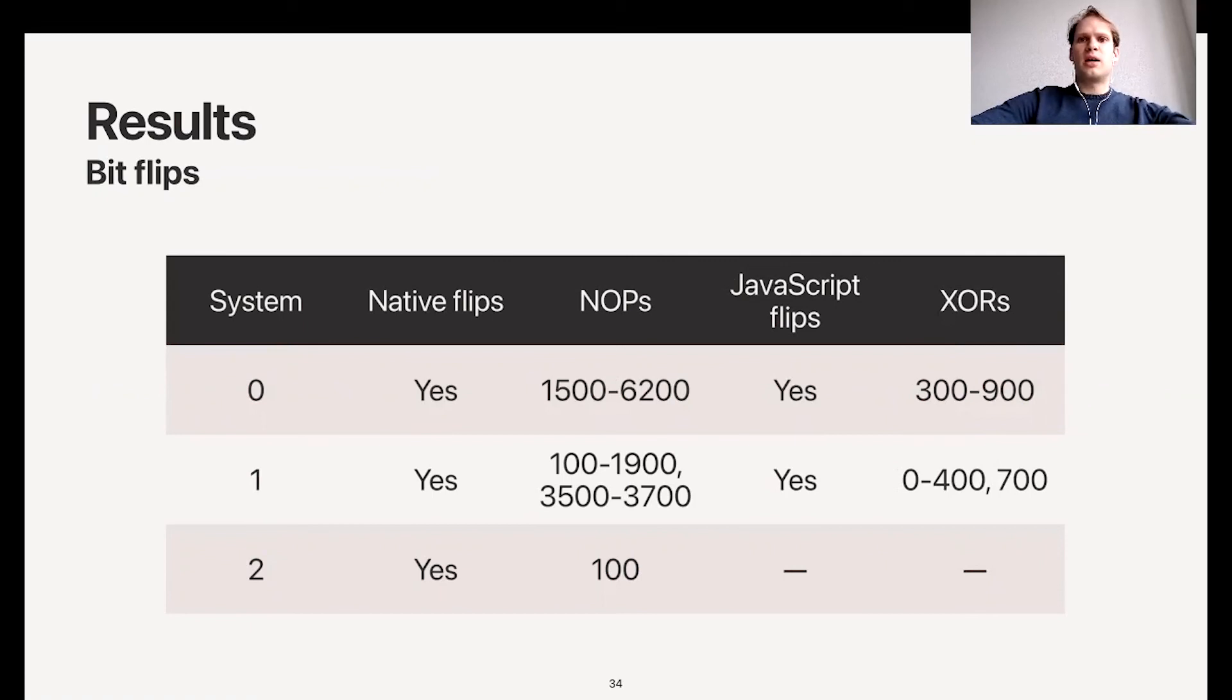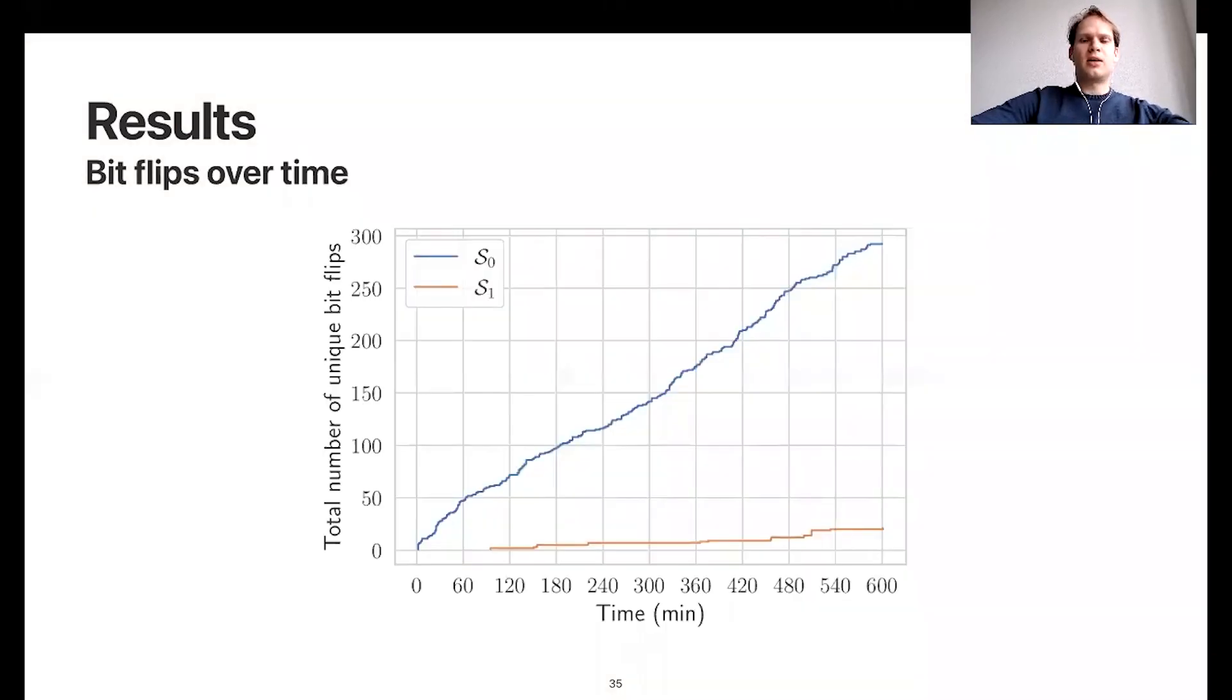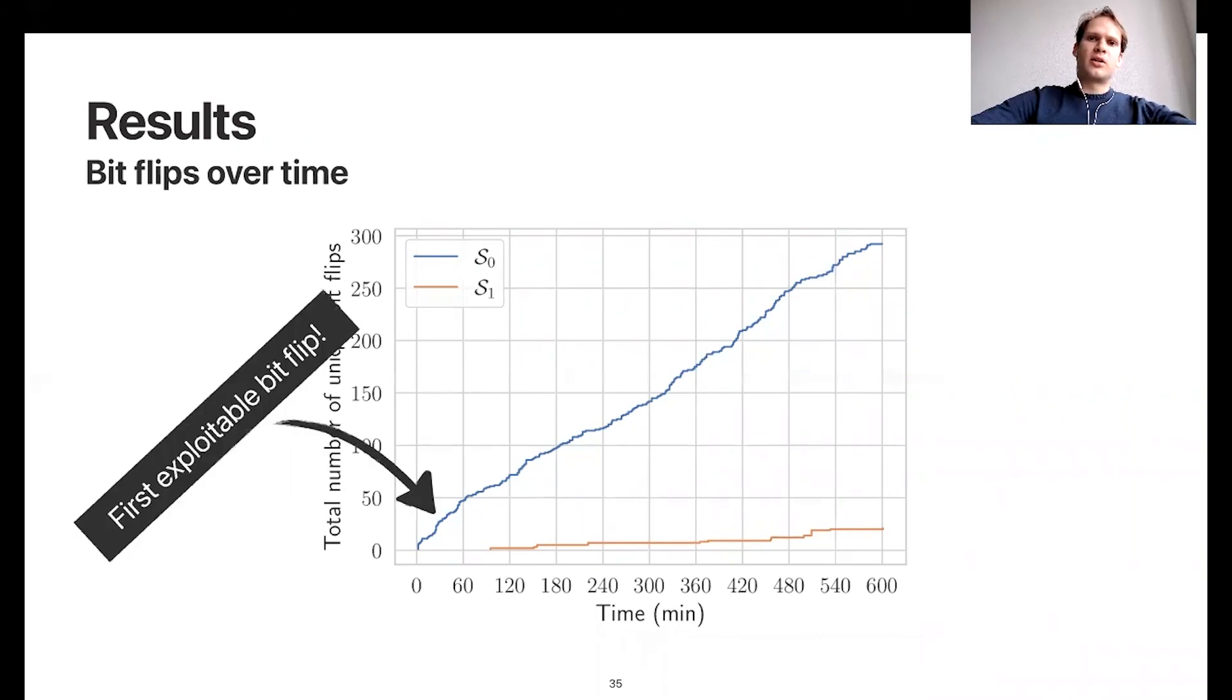You can see the number of NOPs we used to trigger bit flips. In JavaScript, because NOPs are not available, we used XORs instead. You'll see these numbers are smaller in JavaScript, presumably because of the overhead added by the JavaScript runtime. Finally, the number of bit flips over time: on system S0, we found an exploitable bit flip after 15 minutes on average. We also explain in the paper how we actually exploit these bit flips.